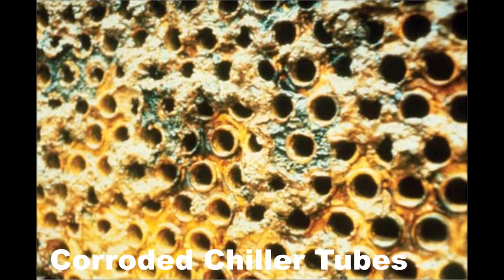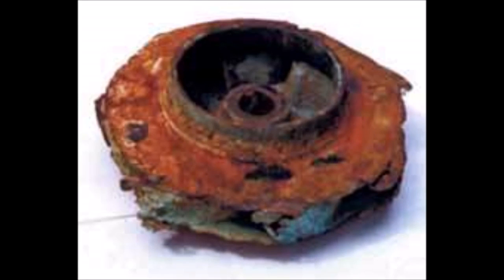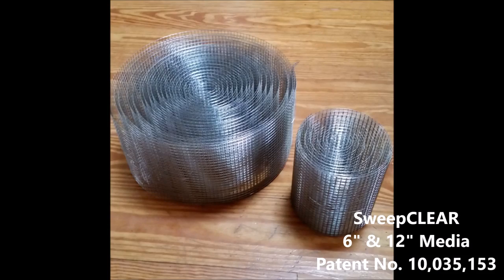Unless an air vent is present at every high point in every device, trapped free air will not be removed. Second, entrained air. Entrained air is air bubbles that travel around in the piping at the same velocity as the water. Air vents will not remove entrained air — it can only be removed if the water velocity is reduced.